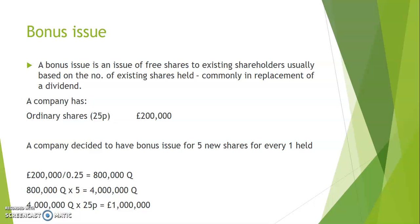So instead of paying dividends to shareholders, they commonly provide free shares — they give additional shares instead of a share of profits, which is known as a dividend. A bonus issue is typically done based on the number of shares that shareholders already hold, so if you have many shares you'll receive a higher share of the bonus issue.